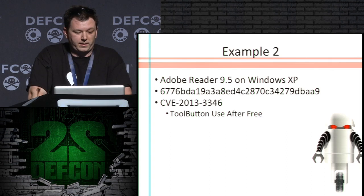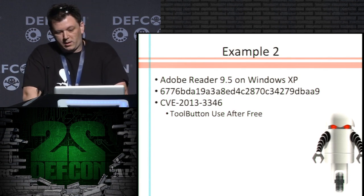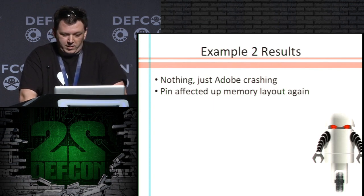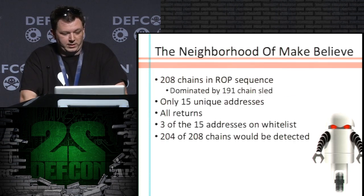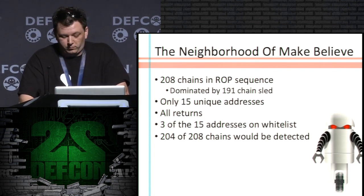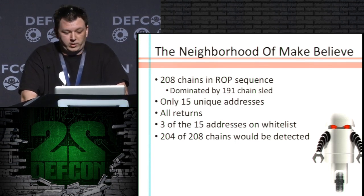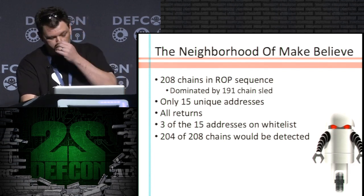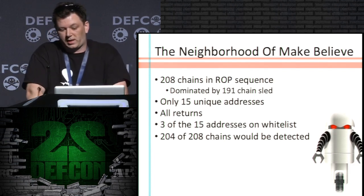Example two: Adobe 9.5 on Windows XP, a more recent vulnerability from late last year. Unfortunately I didn't get anything — PIN was messing up the memory layout again despite my best efforts. So we have to go to the make-believe again. This one actually had a huge ROP sequence — 208 — but it was dominated by a NOP sled essentially, returning to itself over and over. Fifteen unique addresses this time, all of them returns. Again only three were on the whitelist. Of all the chains, we detect 244 out of the 208, so we seem to have about the same detection rate on the address part.